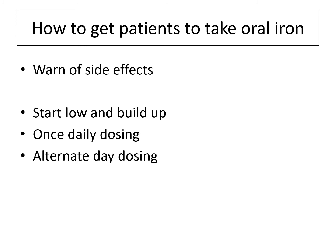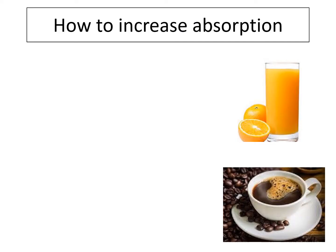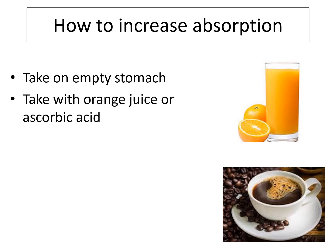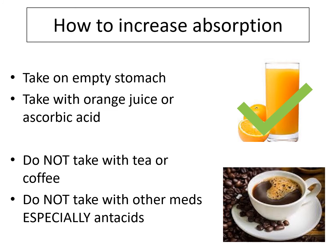If that gives side effects, you can even try alternate day dosing. Point number nine is about increasing absorption — make every tablet count if they are causing side effects. Take on an empty stomach and take with orange juice or ascorbic acid to increase the amount absorbed. Do not take with tea or coffee, as the tannins will inhibit iron absorption and make it a total waste of time. Don't take with other medications, especially PPIs and other antacids, as that will affect absorption.